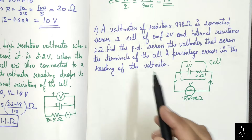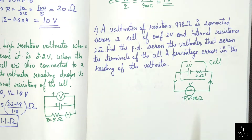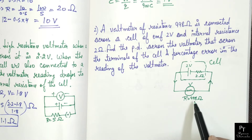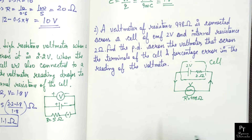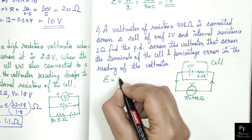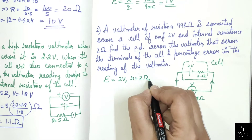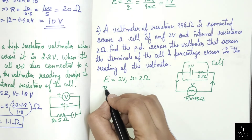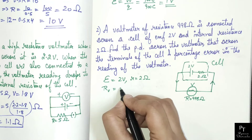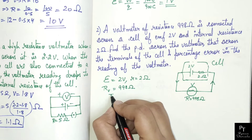In this question we will find potential difference across the voltmeter. We know that potential difference across the voltmeter is current into resistance. Now we have to find current. Given: EMF equals to 2 volts, internal resistance of cell equals to 2 ohms, and resistance of voltmeter equals to 998 ohms.